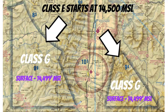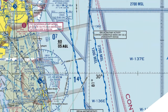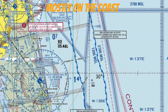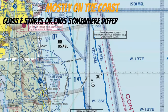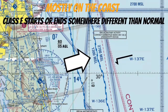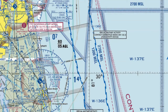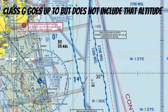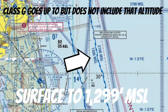There is something I failed to mention in the last lesson on Class Echo airspace. There is a possibility that you may run into these zippered blue markings. There aren't too many in the continental United States, and you'll find most of them on the coast. These just mean that the Class Echo starts or ends somewhere different than normal. They tell you exactly where the Class Echo airspace starts — on this side of the zipper it starts at 1,300 MSL, and over here the bottom of Echo starts at 2,700 MSL. Then we've got Class Golf underneath there, going up to, but not including, that altitude. In this case, Golf starts at the surface and goes up to 1,299 feet MSL.